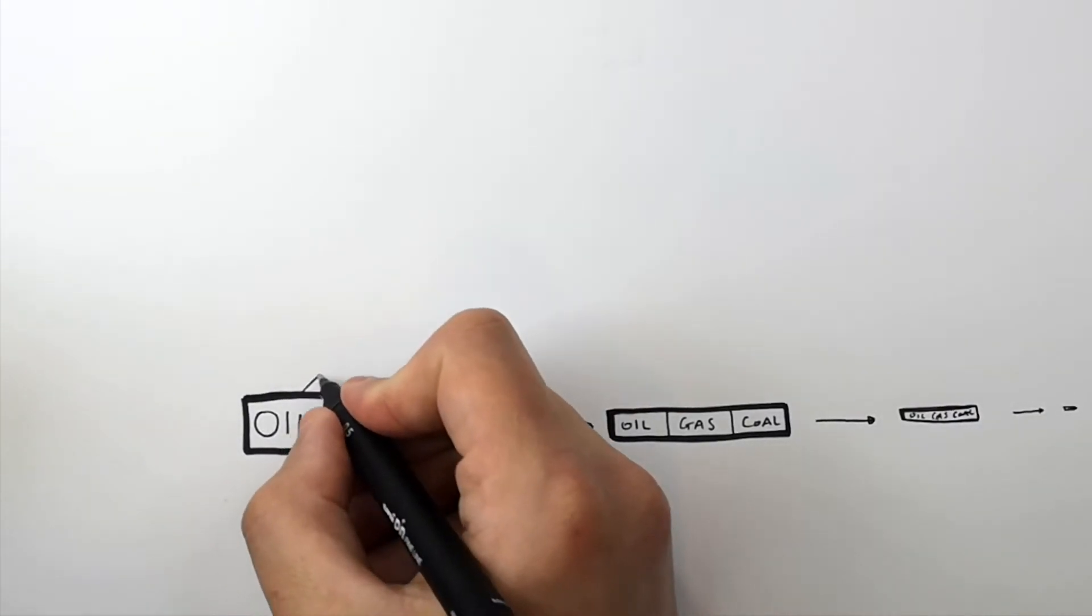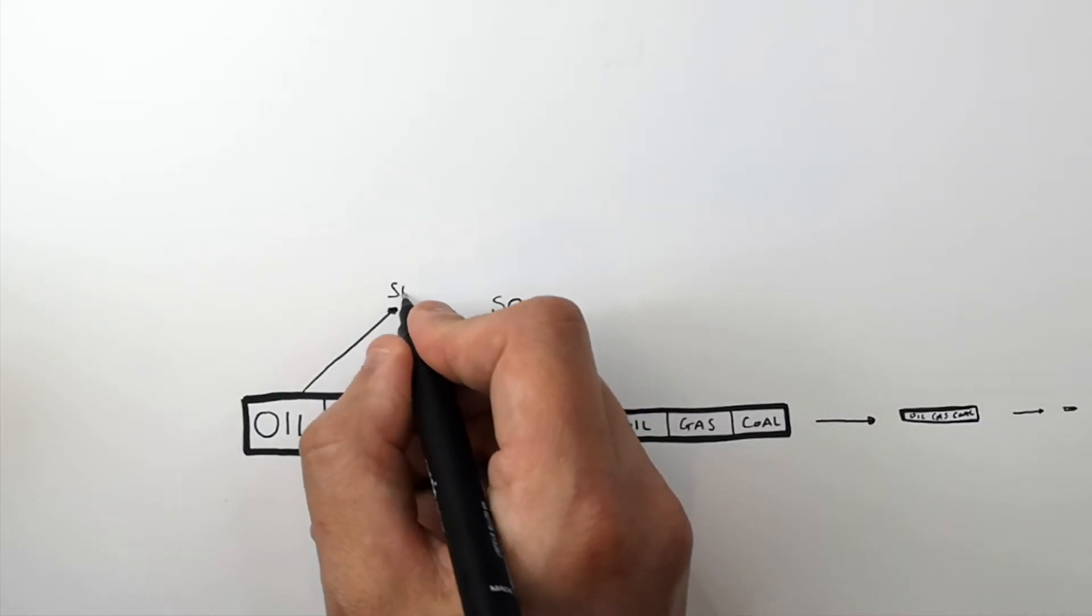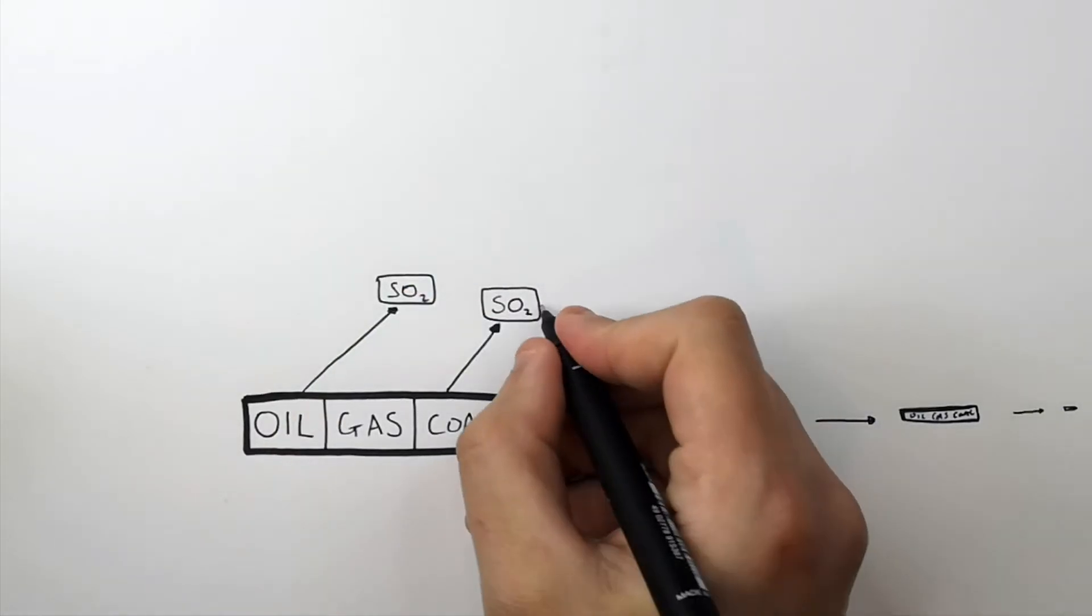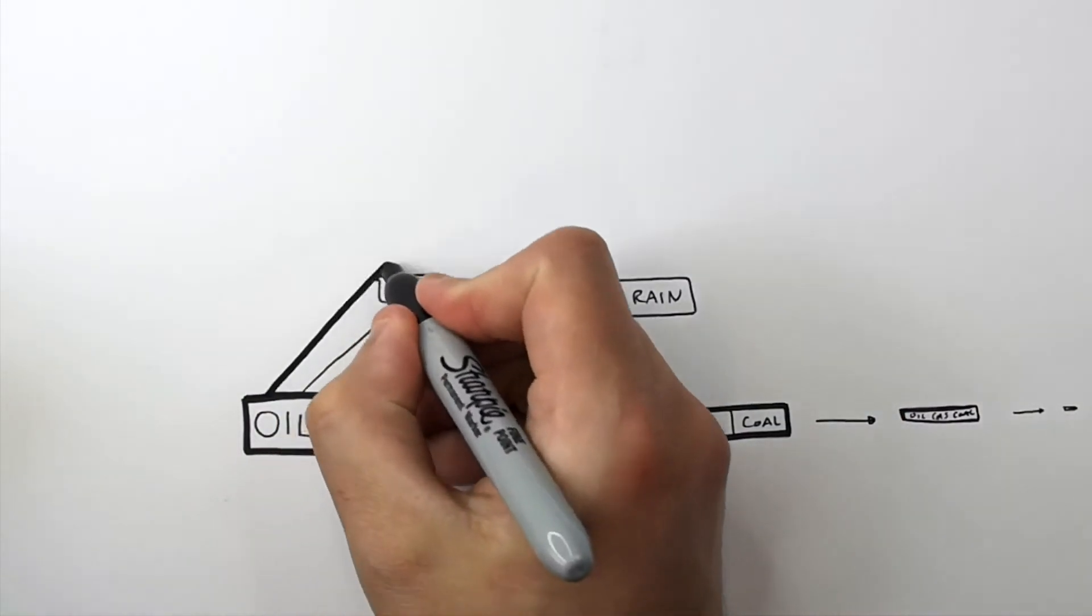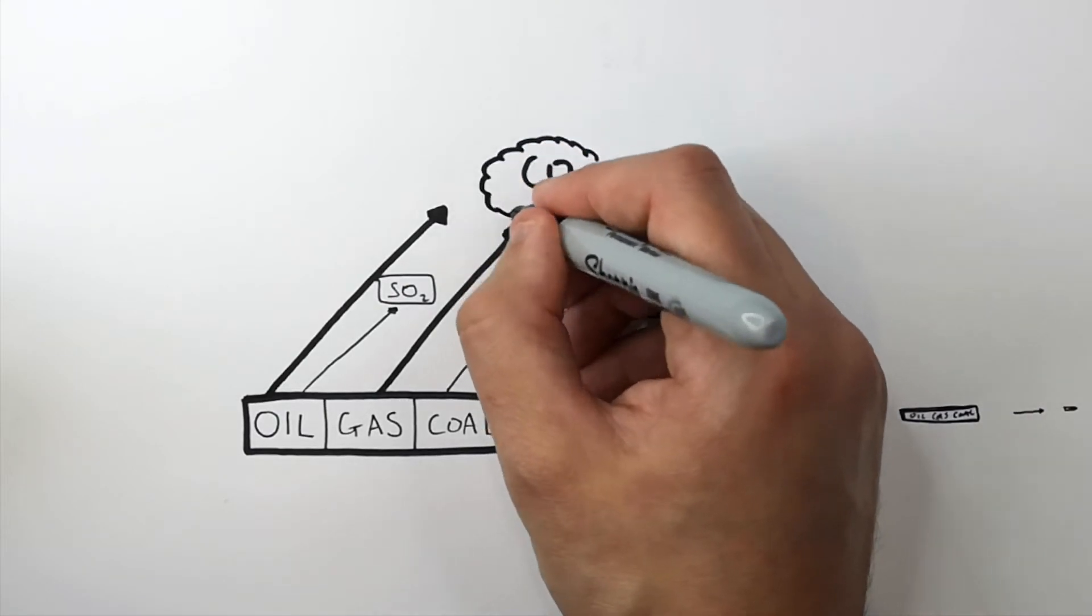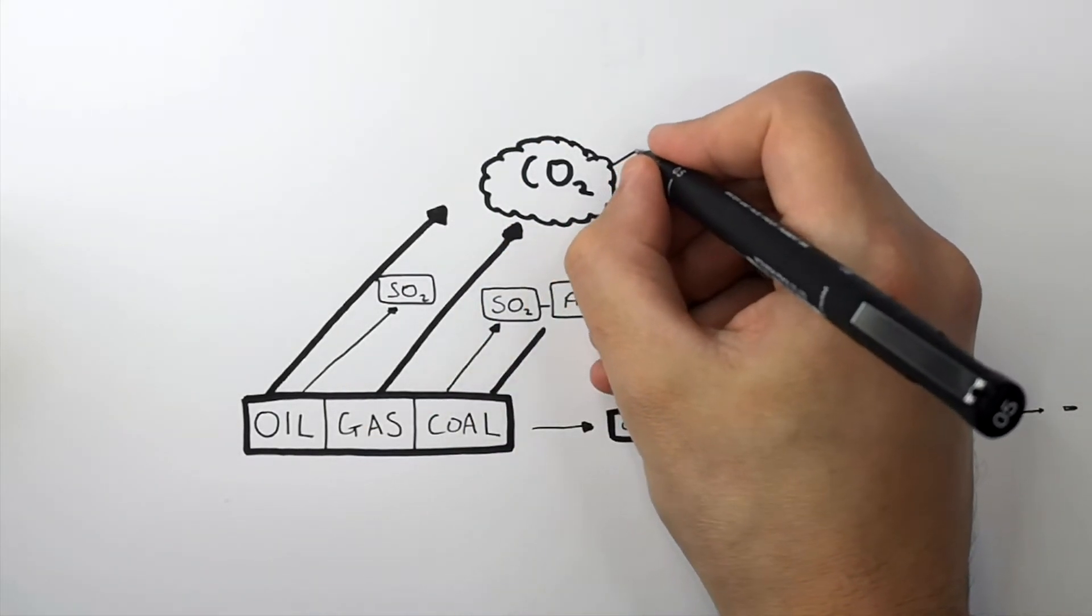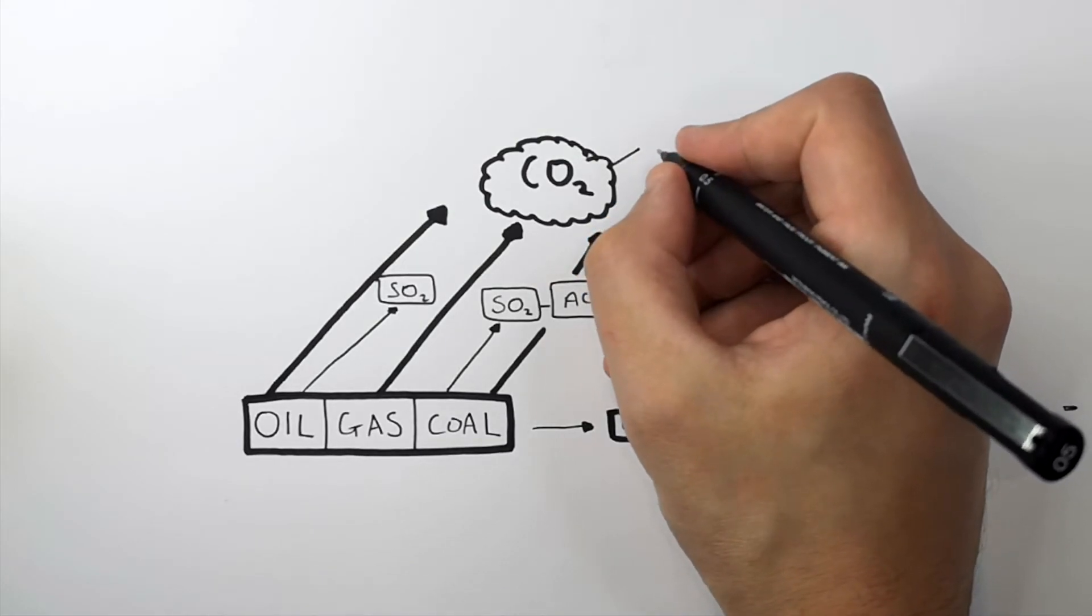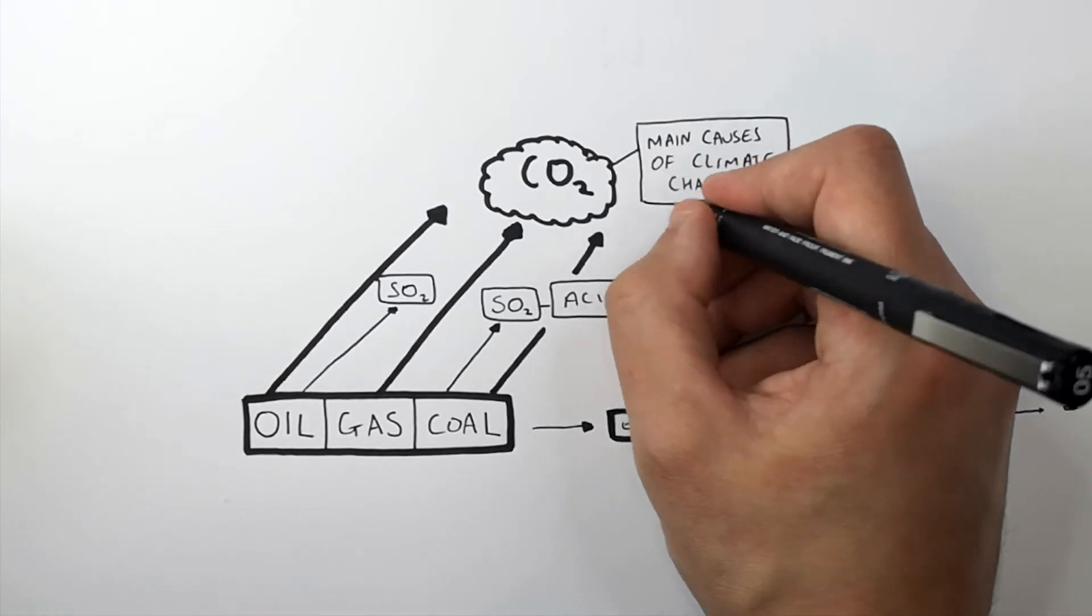Fossil fuels are very polluting. When oil and coal are combusted they release sulfur dioxide, SO2, which is a large contributor to acid rain. However, carbon dioxide is a product of combustion of all the fossil fuels. So when oil, gas and coal are combusted, CO2 is released into the atmosphere. CO2 is the main cause of climate change as well as global warming.